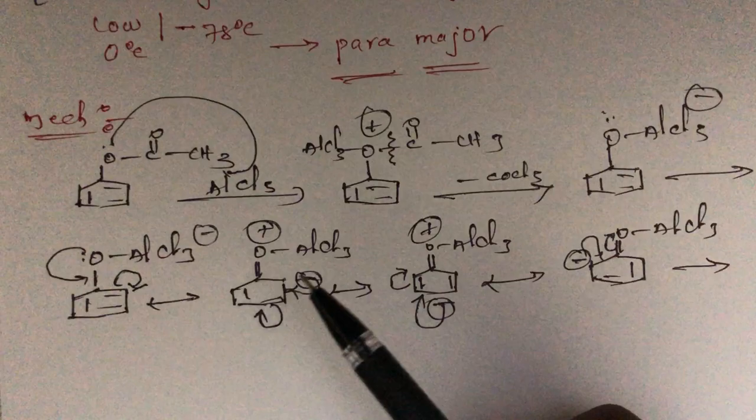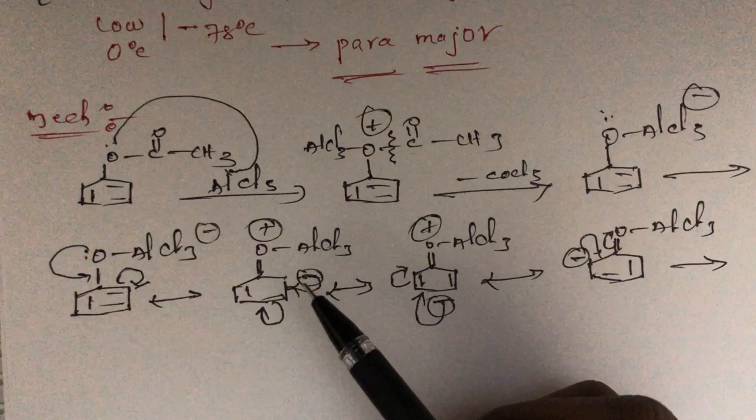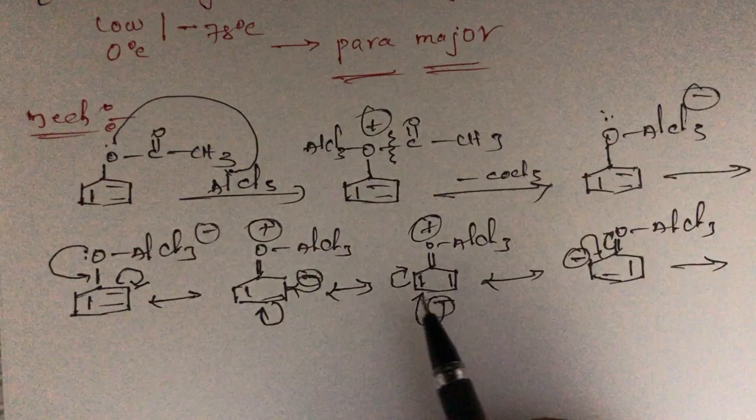You should not write answers at the meta position. In MCQ questions, they will give meta as an option, but in Fries rearrangement you should remember that meta position products are not obtained — the answer is only ortho or para positions based on the temperature required.